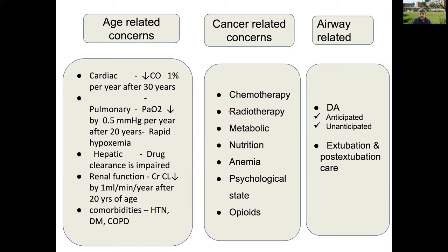Cancer-related issues include the effects of chemotherapy and radiotherapy. There are metabolic and nutritional issues — patients are usually unable to maintain good appetite and have difficulty eating, so they are malnourished, albumin will be low, and they will be anemic. These all make perioperative management more complex. There may also be psychological issues and patients are usually on opioids because of pain, requiring dose modification intraoperatively and postoperatively.